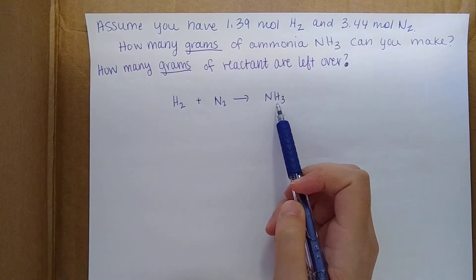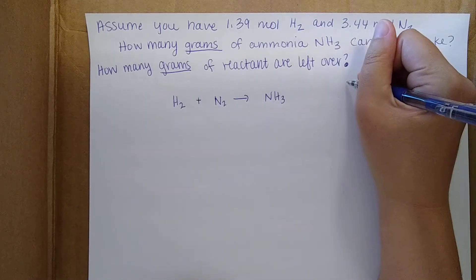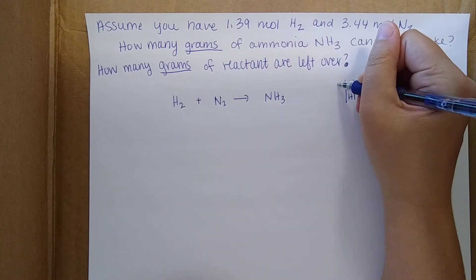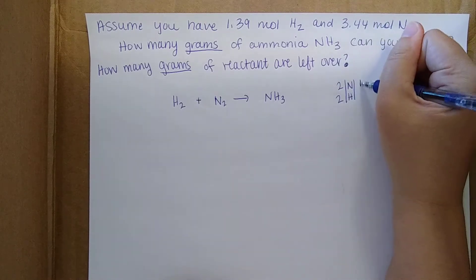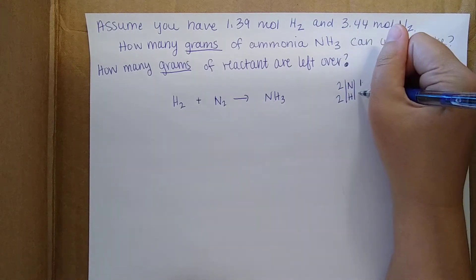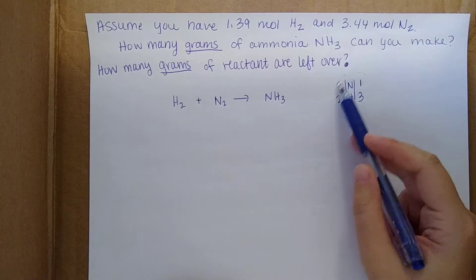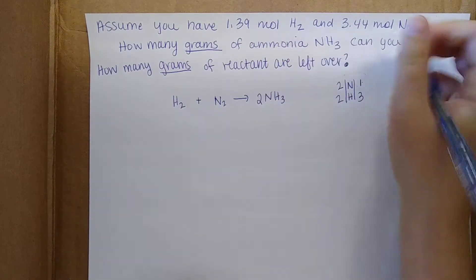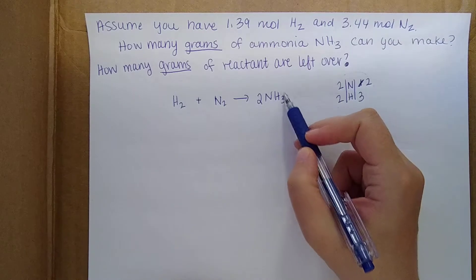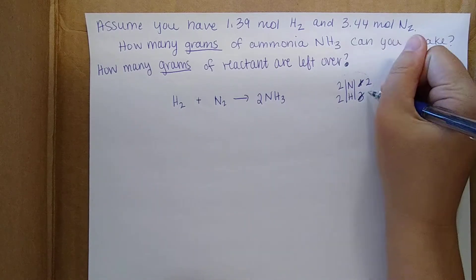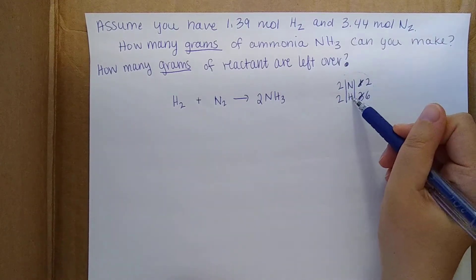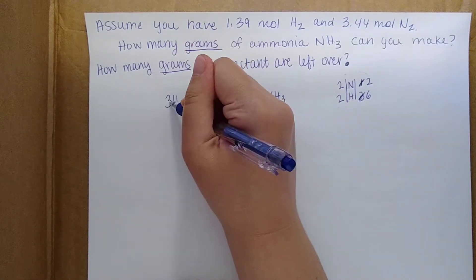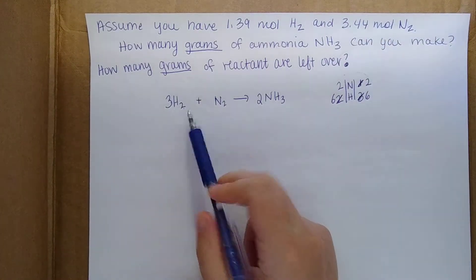You can tell by glancing at this that it isn't balanced — we have three hydrogens on one side and two on the other. On our reactant side we have two nitrogens and two hydrogens; on our product side we have one nitrogen and three hydrogens. I'll balance nitrogen first by putting a 2 in front of NH3 — that balances the nitrogens but gives us six hydrogens on the product side, two times three. So we put a 3 in front of H2 to match: three times two is six. This is our balanced reaction.